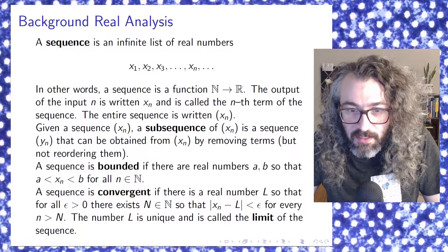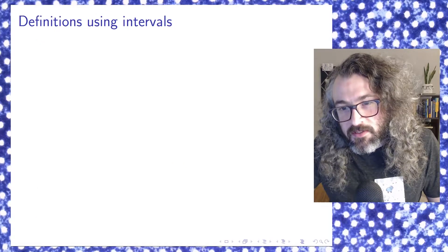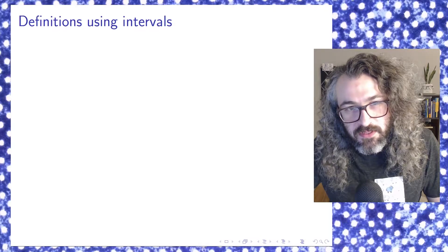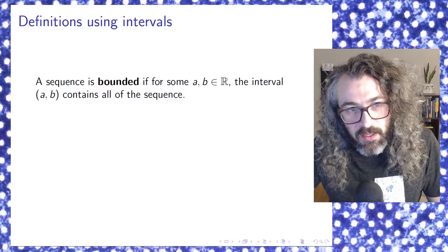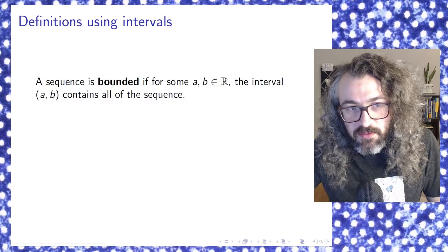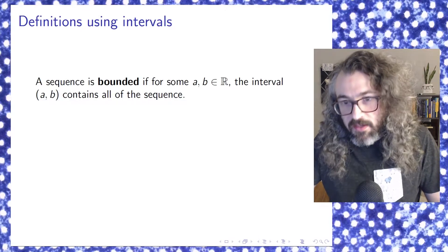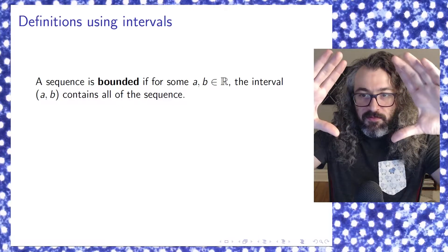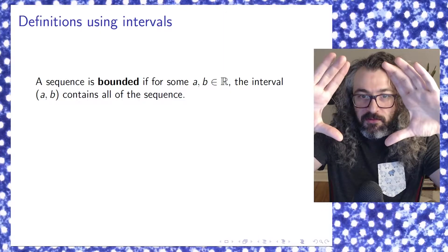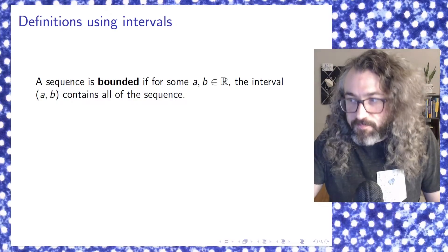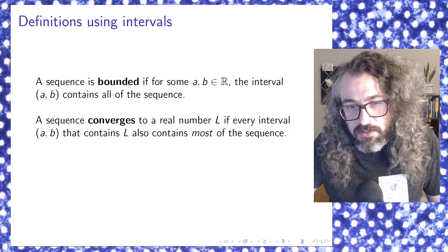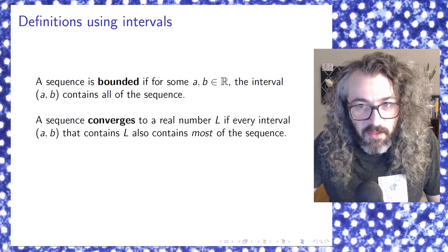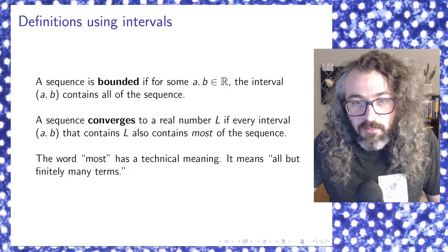I'm going to mention a couple of alternative ways to think about bounded sequences and convergent sequences using intervals. A sequence is bounded if for some a and b in the real numbers, the interval from a to b contains all of the sequence. So if you imagine here's the real number line and I've got some sequence sprinkled in there — it's bounded if there's some finite-length interval from a to b that contains all of the points in the sequence. And a sequence converges to a real number l if every interval that contains l also contains most of the sequence — and the word most here means all but finitely many terms.